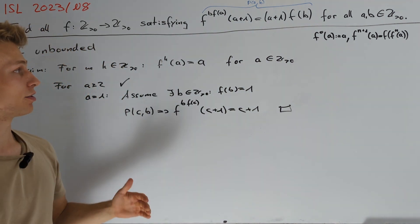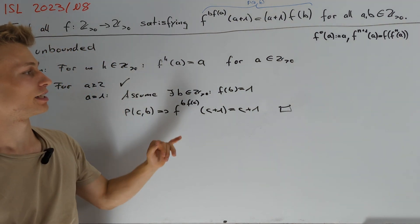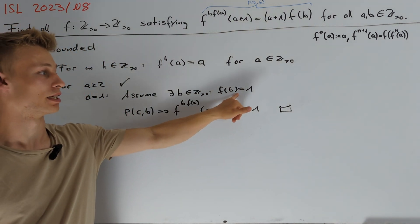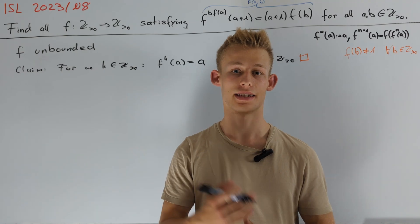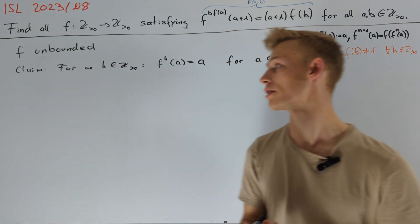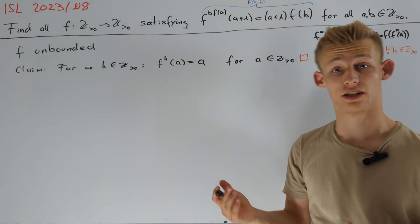Moreover, we figured out that we can't find a value b such that f(b) equals 1. Let's erase the proof of our claim and write this fact down. As the next step, we could try to find out if our function f is injective or not.